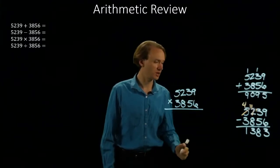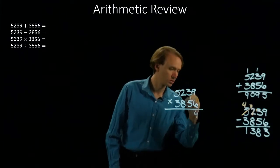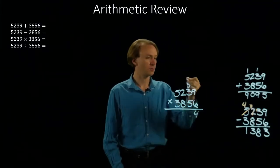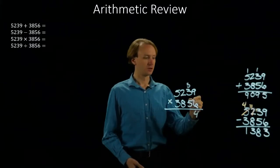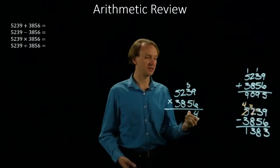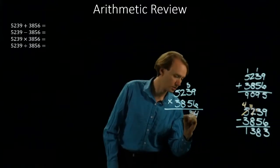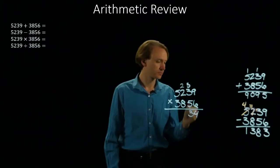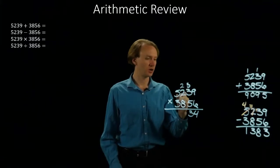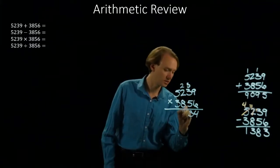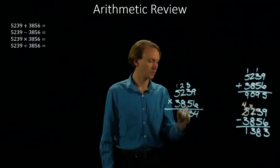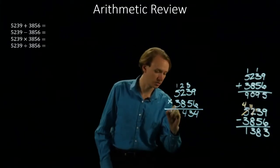So 6 times 9 is 54. So I write down the 4, and I'm carrying the 5. 6 times 3 is 18. And now I'll add in the 5. That will give me 23. 6 times 2 is 12, plus 2 is 14. 6 times 5 is 30, plus 1 is 31.